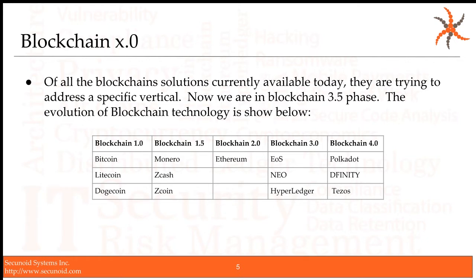The next evolution, blockchain 4.0, includes technologies like Polkadot, Dfinity, and Tezos. These introduce more concepts on the platforms blockchain 3.0 already introduced — such as inter-blockchain operability and consensus mechanisms, where changes to the blockchain can only be implemented by going through a consensus mechanism. Tezos is planning to go live on this hopefully sometime in summer.